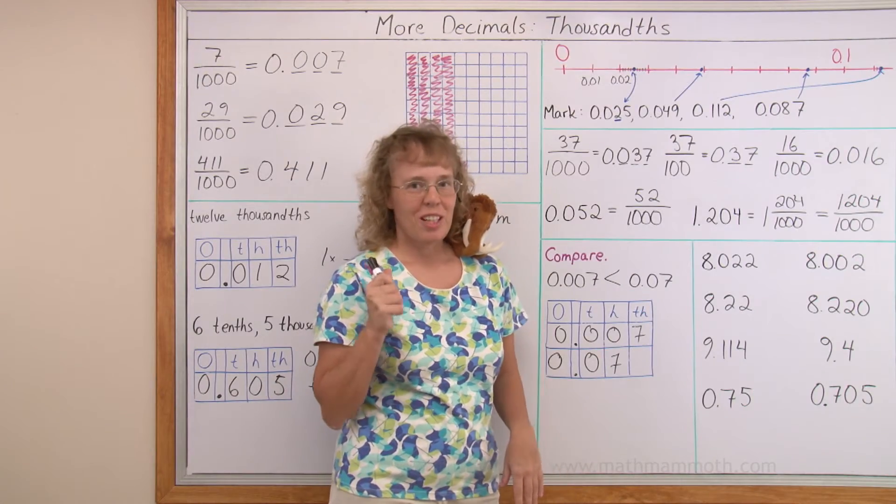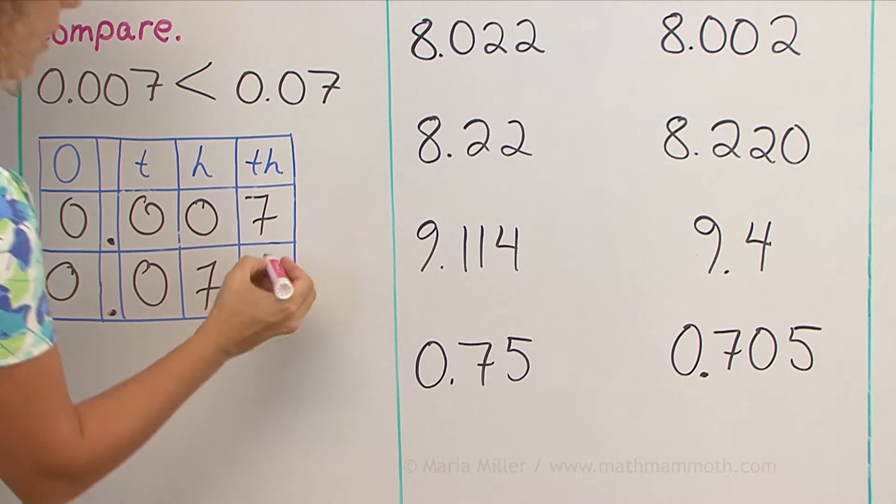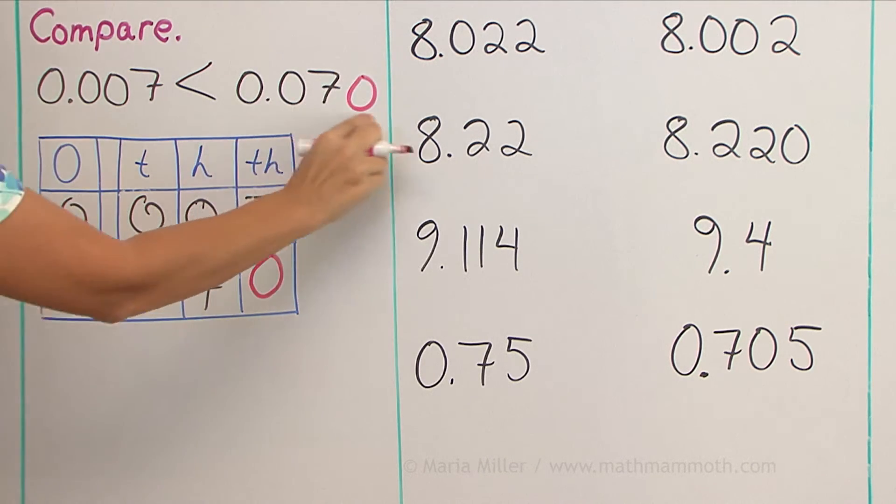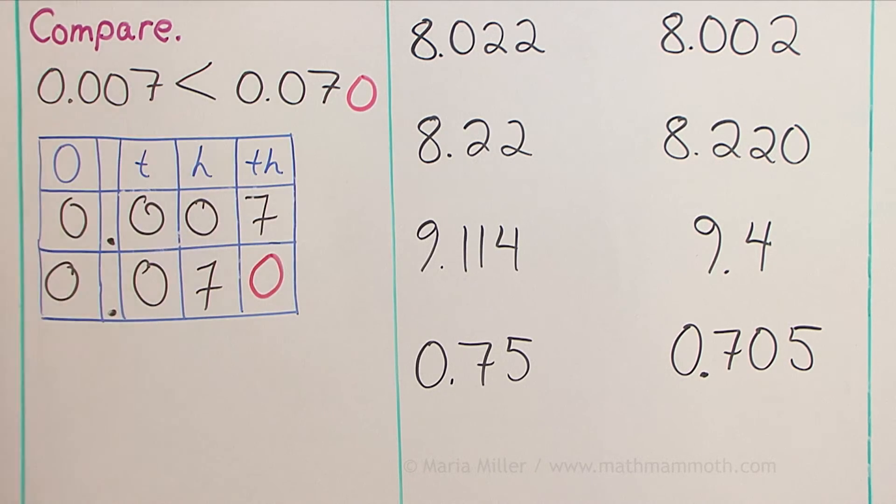There's also another way you can easily see this. And that is, if I place a zero here, or here, and I read this number as seventy thousandths, then obviously it is more than seven thousandths.